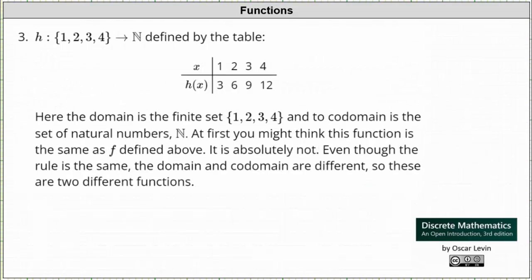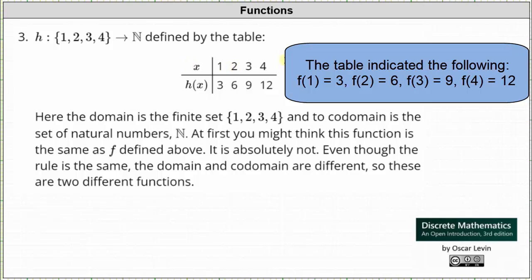Let's look at one more example of a function. Here we have the function h that maps the set containing elements one, two, three, and four to the set of natural numbers, defined by a table where we have the inputs in the first row and the outputs in the second row. The codomain, indicated by N, is the set of natural numbers.